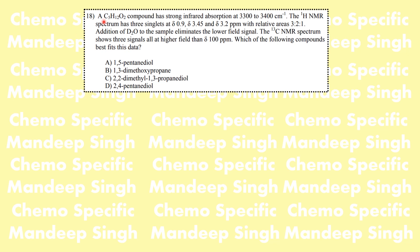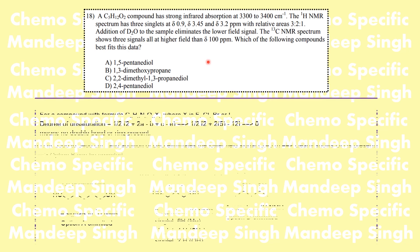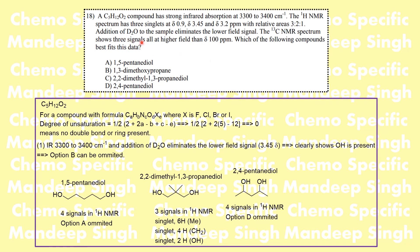They are talking about a compound having a particular molecular formula. It has a strong IR absorption between 3300 and 3400, and you see three signals in the NMR. When you add D2O into the sample, the lower field signal at 3.45 disappears. This clearly means we are talking about an alcohol or phenolic kind of system.